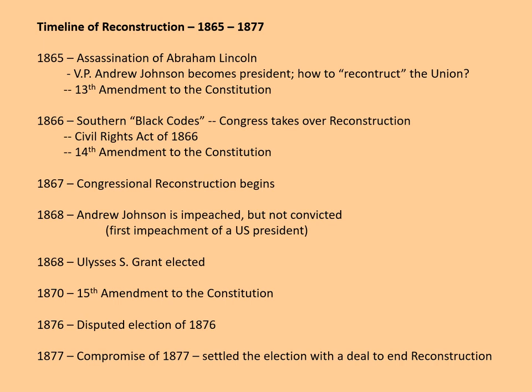Congress responded to the black codes in 1866 by passing the nation's very first Civil Rights Act — the Civil Rights Act of 1866 — declaring that blacks were citizens of the United States and that the federal government would protect their rights. This was necessary because the Supreme Court's 1857 Dred Scott decision had ruled that blacks were not citizens. Congress also passed the 14th Amendment to the Constitution, which for the first time constitutionally defined American citizenship: anyone born in the United States is automatically a citizen.